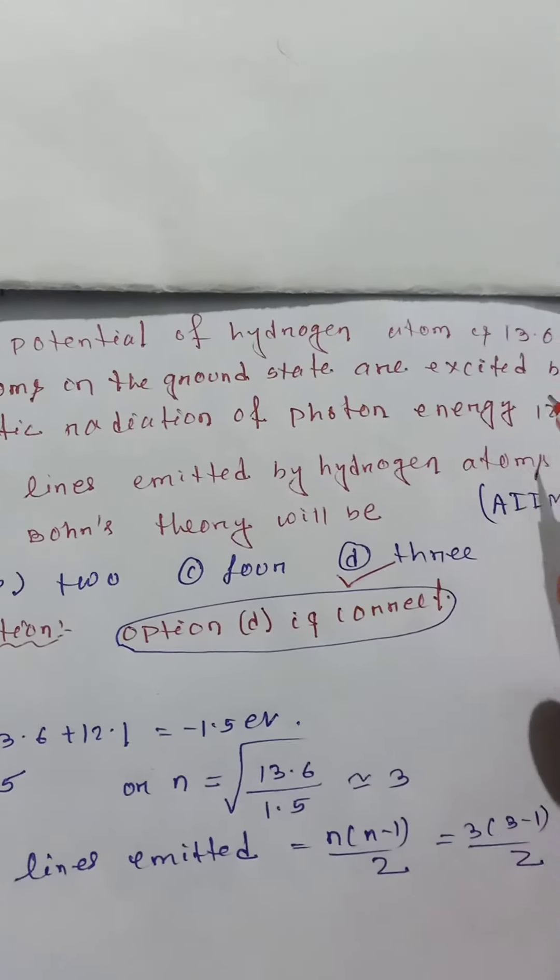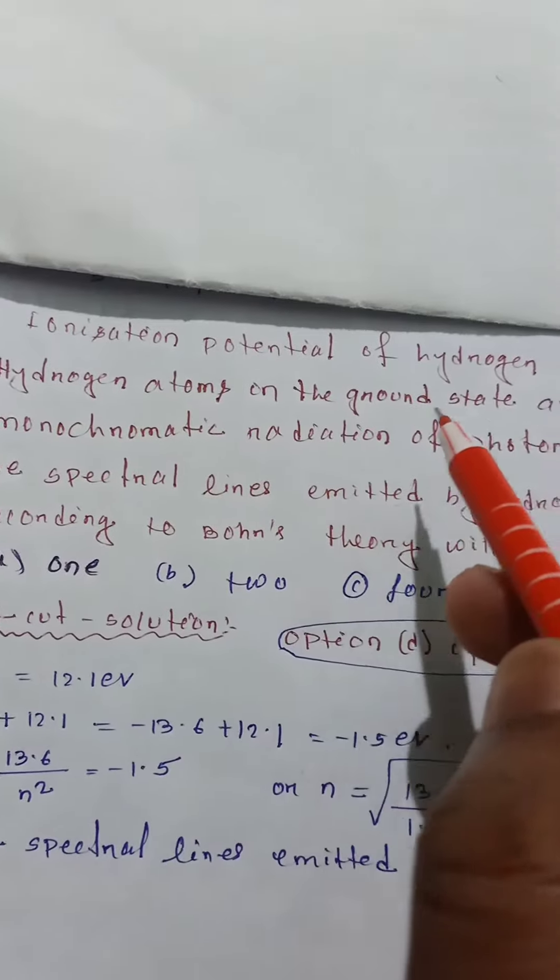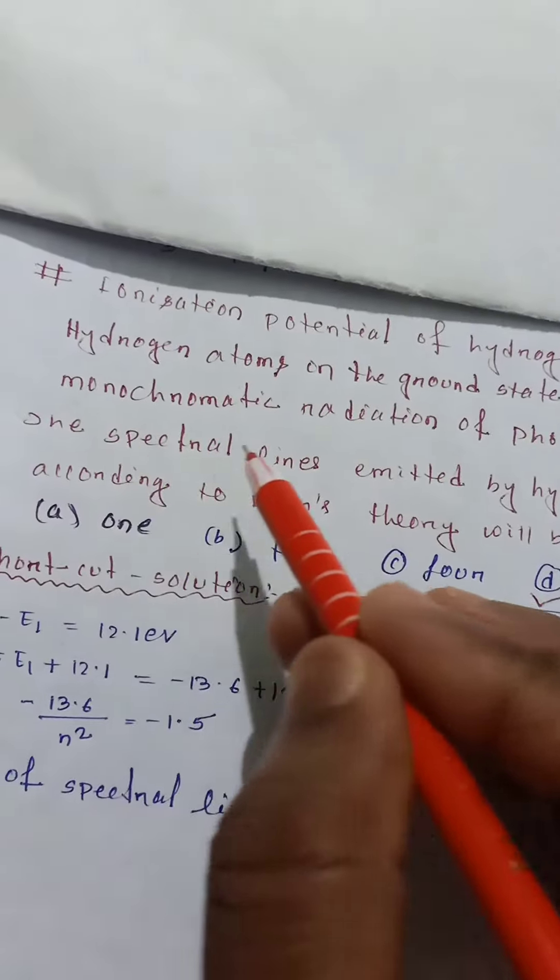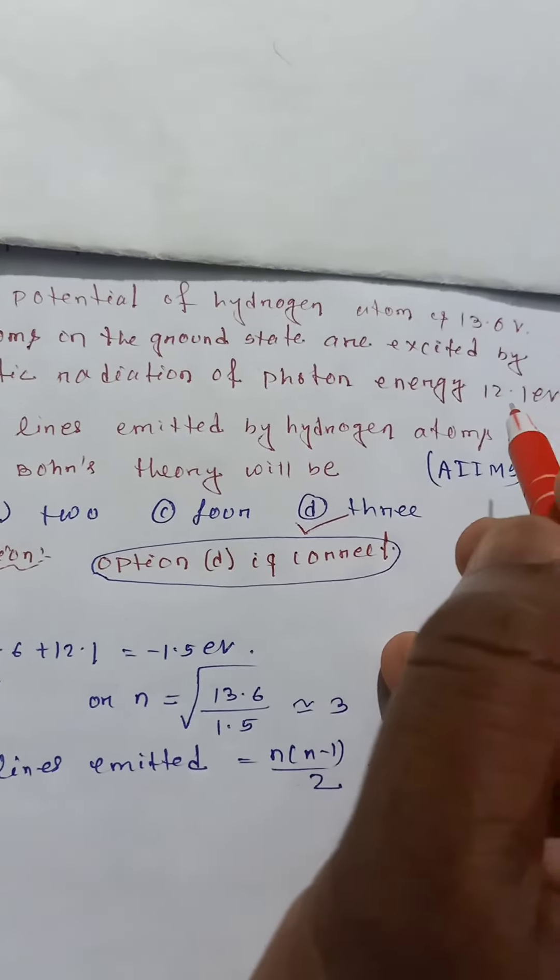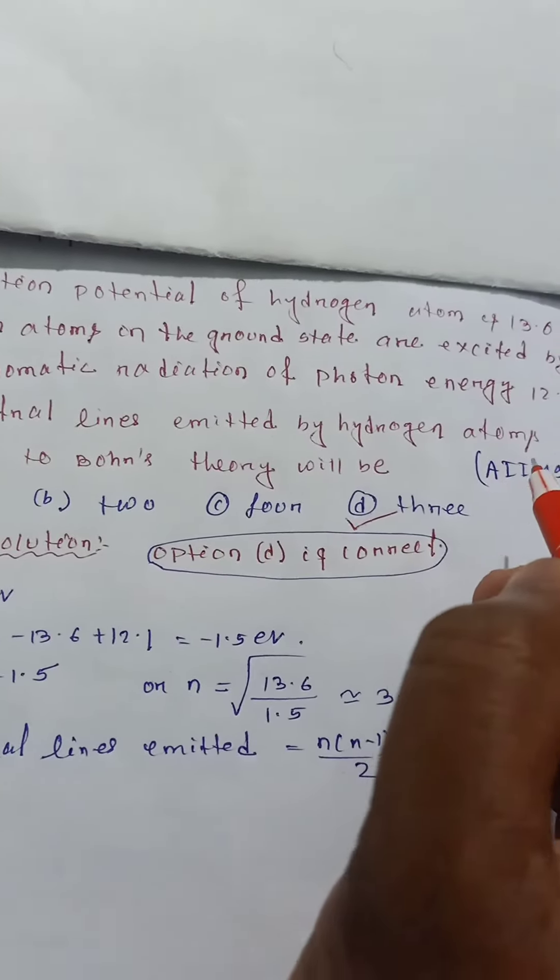The ionization potential of hydrogen atom is 13.6 volts. The hydrogen atom in the ground state are excited by monochromatic radiation of photon energy 12.1 electron volts. The spectral lines emitted by hydrogen atoms,